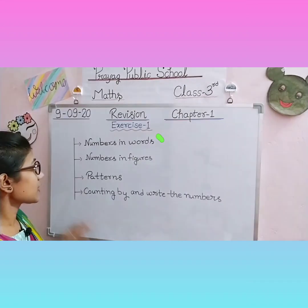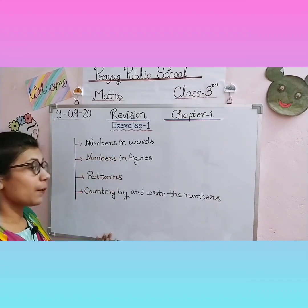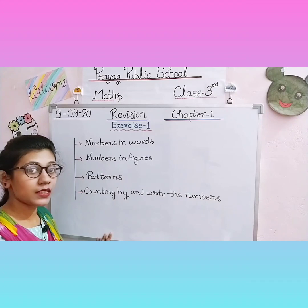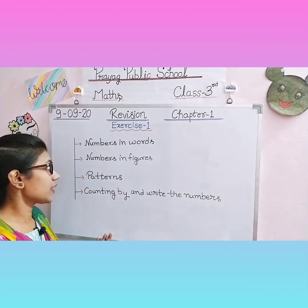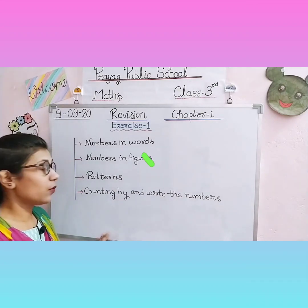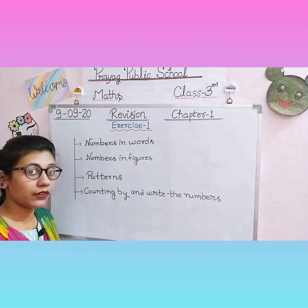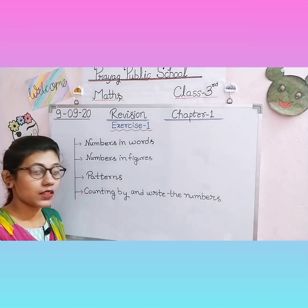The first topic is numbers in words — how do we write numbers in words? When a number is given in figure form, how can we write it in words? The second topic is numbers in figures — when a number is given in words, how do we write it in figures? Both are the opposite of each other.